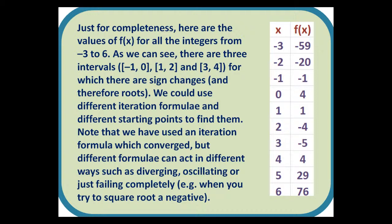We could use different iteration formulae and different starting points to find them. Note that we have used an iteration formula which converged, but different formulae can act in different ways, such as diverging, oscillating, or just failing completely. For example, when you try to square root a negative. And that's it, iterations and roots.